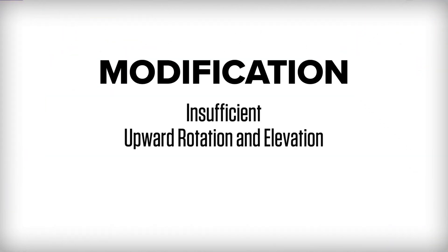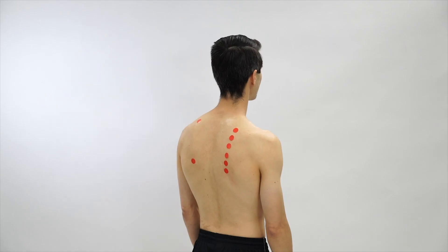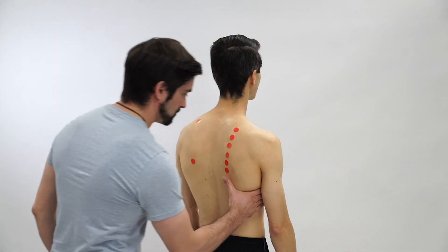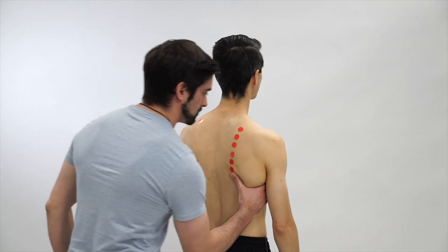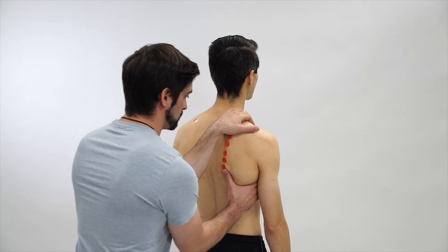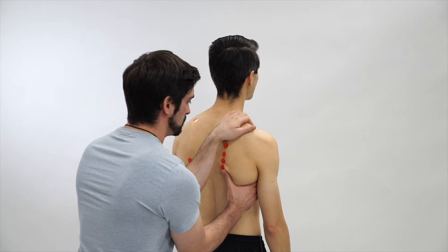Symptom Modification Procedure: Insufficient Upward Rotation Elevation Movement Correction. The patient is in scapular downward rotation and depression. The therapist's moving web space is at the inferior angle, and his stabilizing hand is at the scapular spine and upper trapezius.